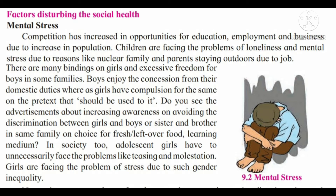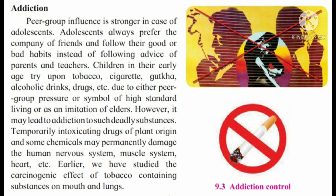Why are children of your age instructed the same in each home? Our lifestyle has been changed to some extent in this age. The second factor that affects the social health is addiction. Peer group influence is stronger in the case of adolescents. Adolescents always prefer the company of friends and follow their good and bad habits instead of following the advice of parents.